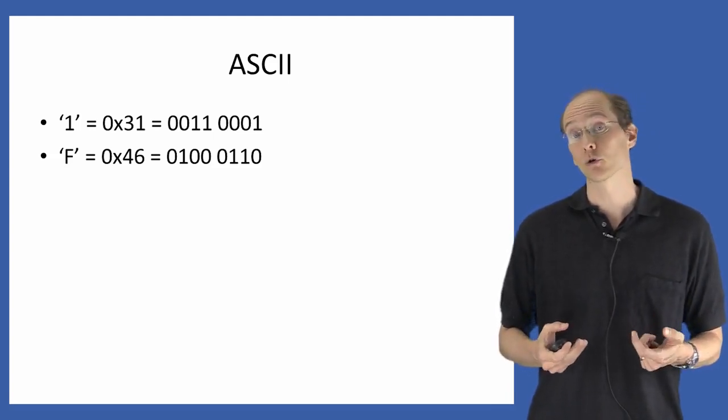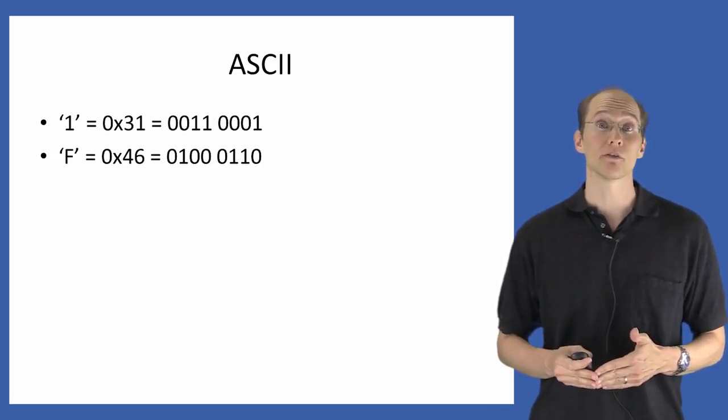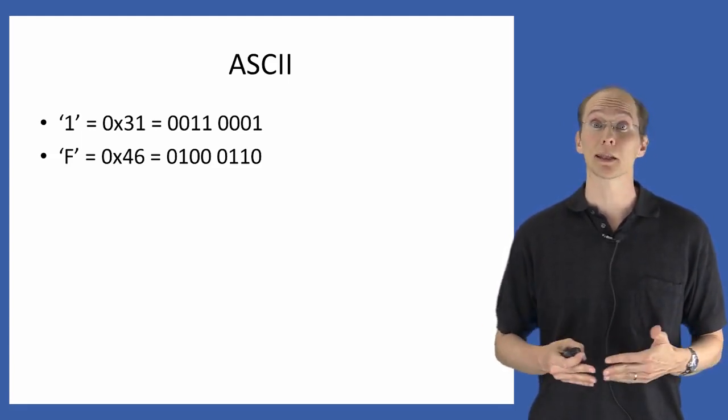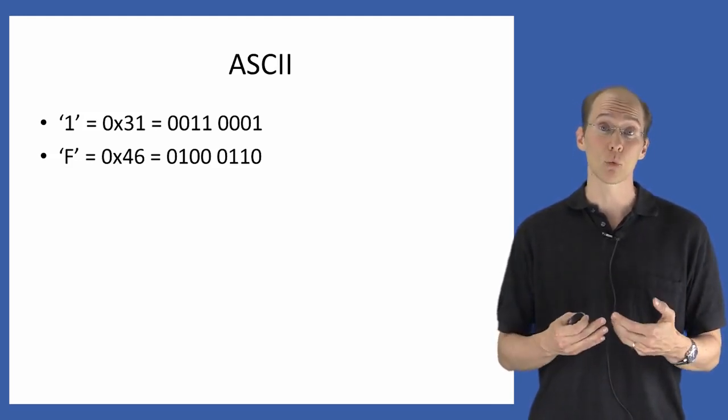The key thing I'm pointing out here is that the character one is not the same thing as the number one. The character one is just a character, and it's arbitrarily been assigned the ASCII value, or the value in the ASCII representation of hex 31, and if you have a character one in a file,